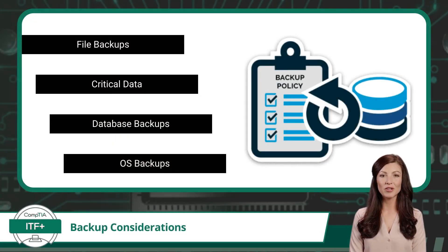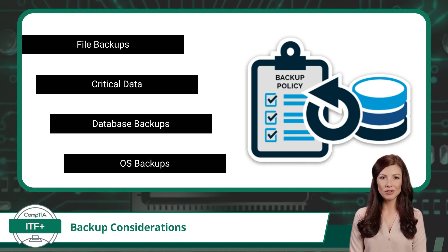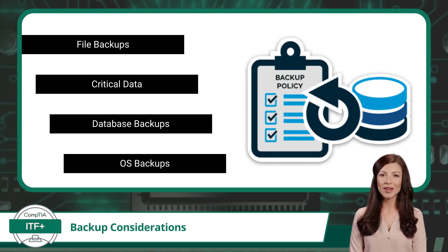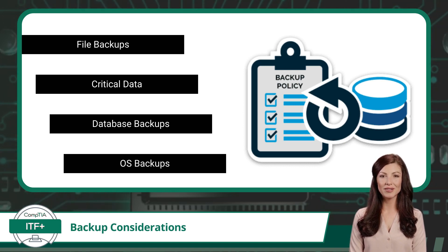So, which types of data should you create a backup for? The answer varies based on the nature and significance of the data, and is a selective process tailored to a user's necessity and preference. At the most basic level, there are file backups, which pertain to specific files or folders you opt to safeguard, such as photos or documents. Then we have critical data, which encompasses indispensable business files or personal datasets, where the loss of such data could spell disaster, emphasizing the need for prioritized backup.